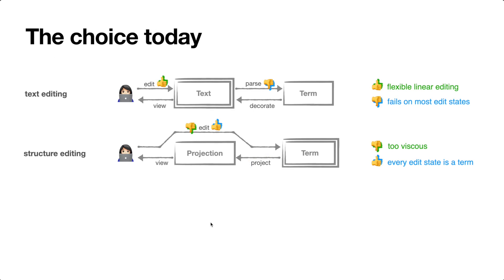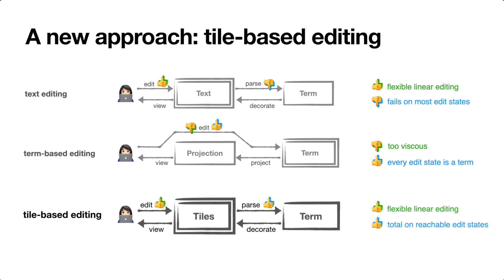So here's the choice today. We can either use text editors and deal with brittle tooling, or we can use structure editors and deal with viscous editing. Now, I don't believe this viscosity is fundamental to structure editing per se, but rather the term-based architecture. So let me revise my terminology here and refer to prior art as term-based editors. And I'd like to propose a new option in this space called tile-based editing, which attempts to get the best of text editing and term-based editing.